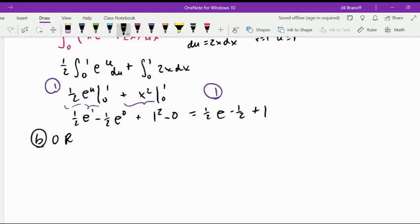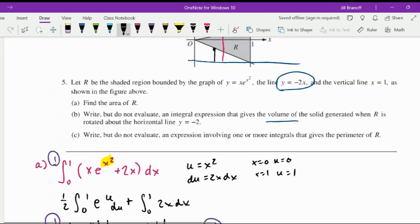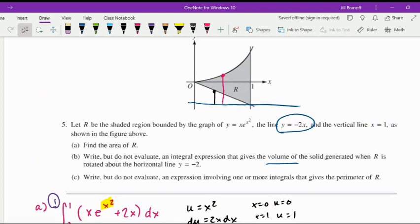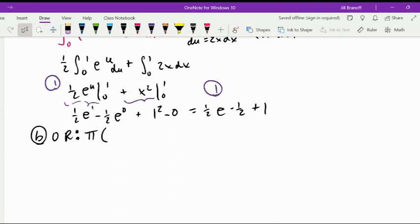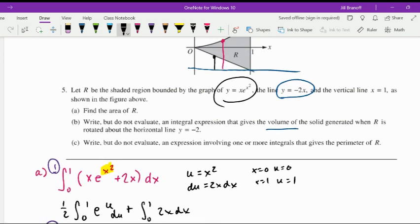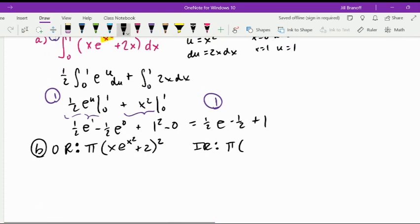For my outer, if I calculate what that area would actually be, pi times R squared, that outer radius would be top minus bottom. So that would be the curve here minus negative 2, so plus 2. So x times e to the x squared plus 2, and that's R squared. For the inner radius, that area would be pi times its radius would be the line plus 2, so that would be negative 2x plus 2, and then that is squared.